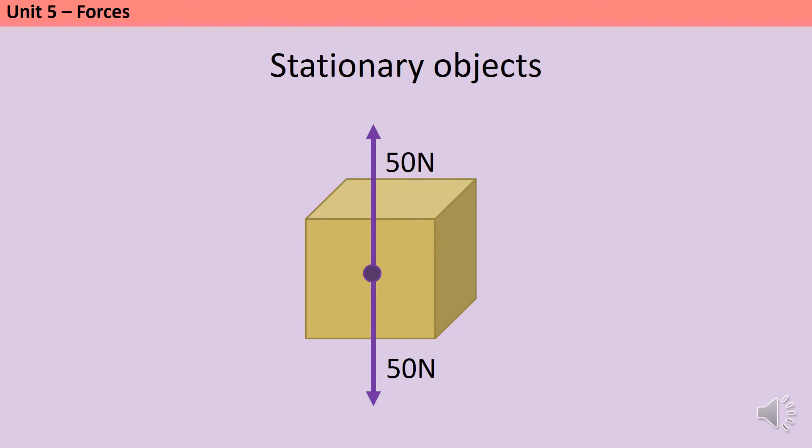We'll look at stationary objects first because they're much easier. Here I have a box sat on the table. It has a weight of 50 Newtons, and it experiences a normal reaction force where the table's basically pushing back that is also 50 Newtons, and that must be true because otherwise it would fall through the table.